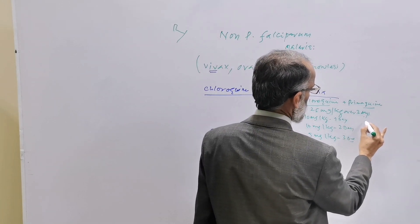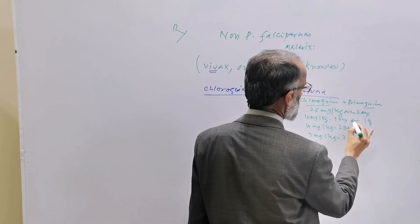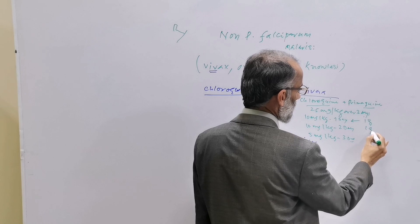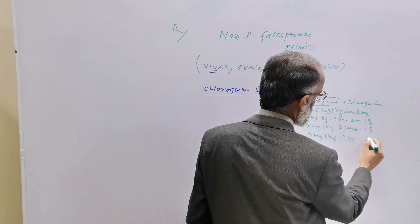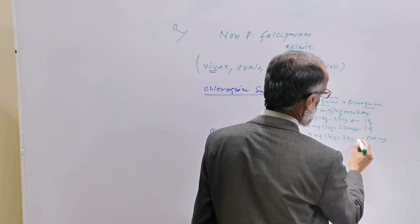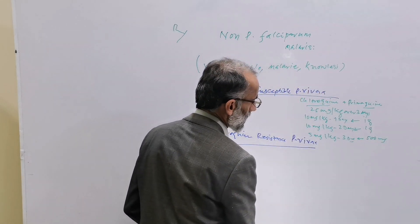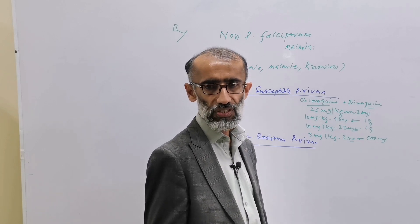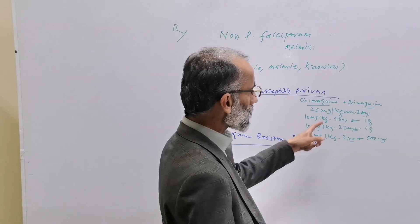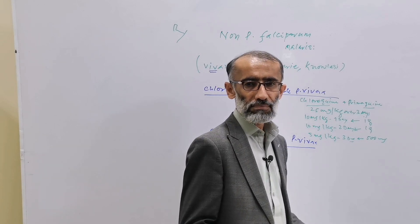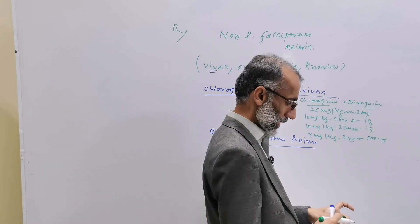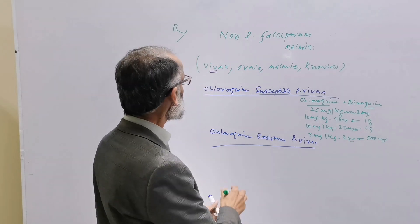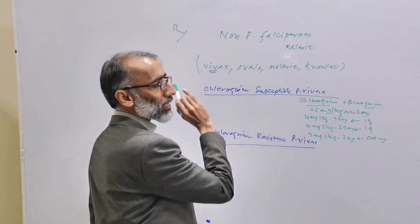It is commonly given as 1 gram chloroquine on the first day, 1 gram chloroquine on the second day, and 500 mg on the third day over 3 days. Chloroquine is given to eradicate the hypnozoites of Plasmodium vivax and Plasmodium ovale.